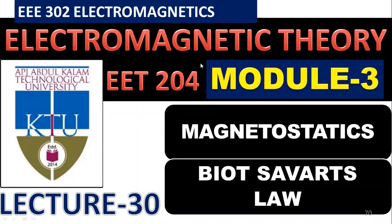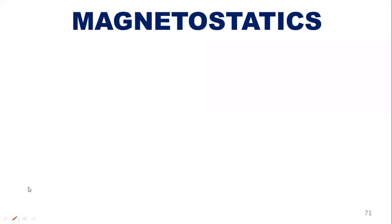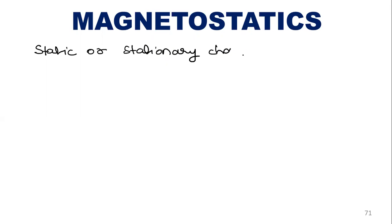We have finished electrostatics, so now we will start module 3, which is magnetostatics. Just like we started electrostatics by studying static charge and then moved on to Coulomb's law, here we study static magnetic field and then move on to Biot-Savart law. In module 2, we studied that static or stationary charges produce electrostatic field.